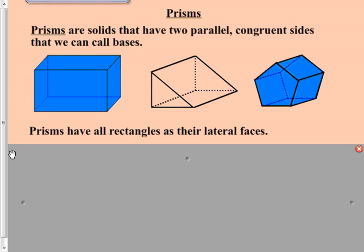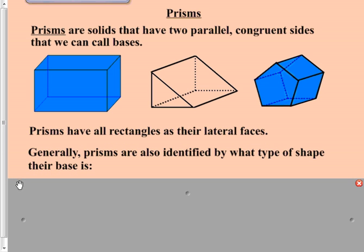Now, another giveaway, something to watch for on a shape in order to decide it as a prism, is the fact that prisms are going to be built out of many rectangles. Now, they can have some other shapes other than rectangles in them, but the rectangles will constitute all of the lateral faces. So the only shapes or the only sides of the prisms that will not be rectangles will possibly be their bases. And generally speaking, we don't just call any prism a prism. It is also identified by what type of shape the bases are.